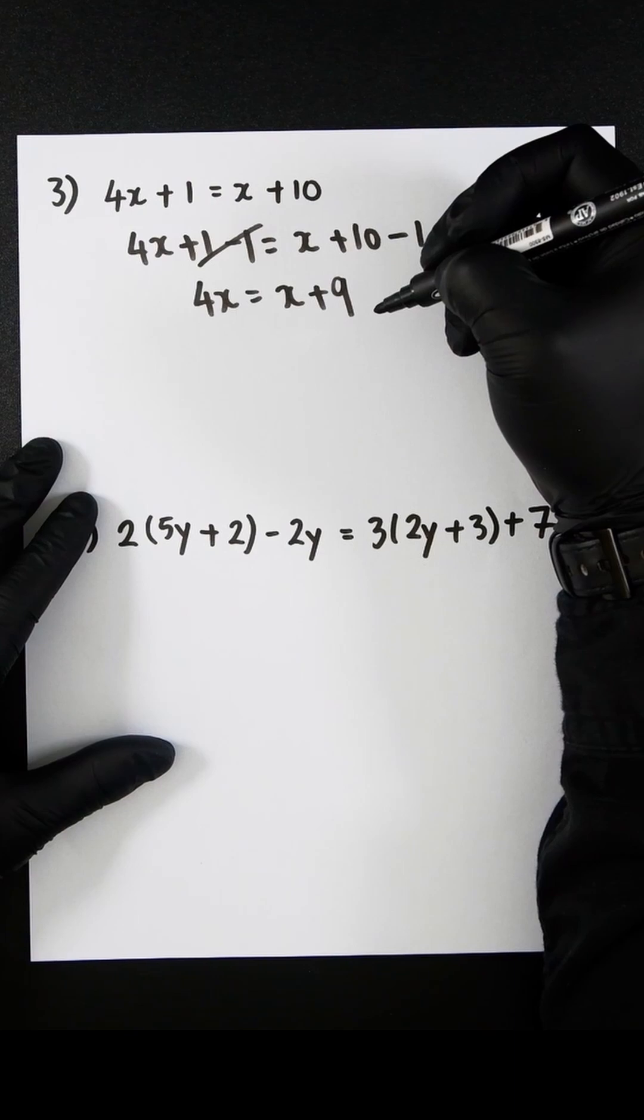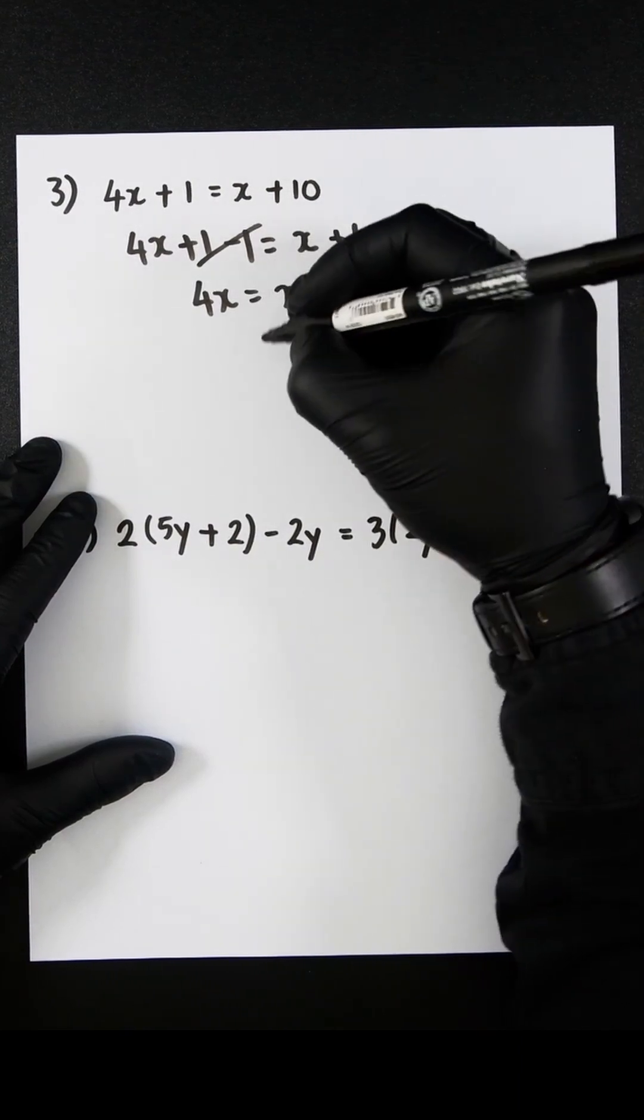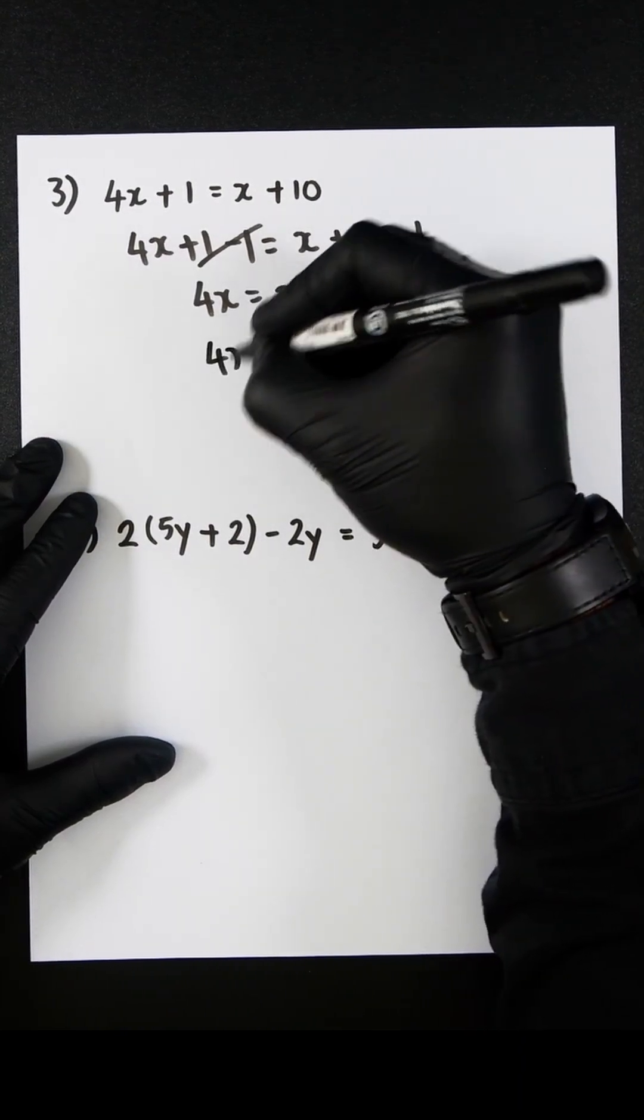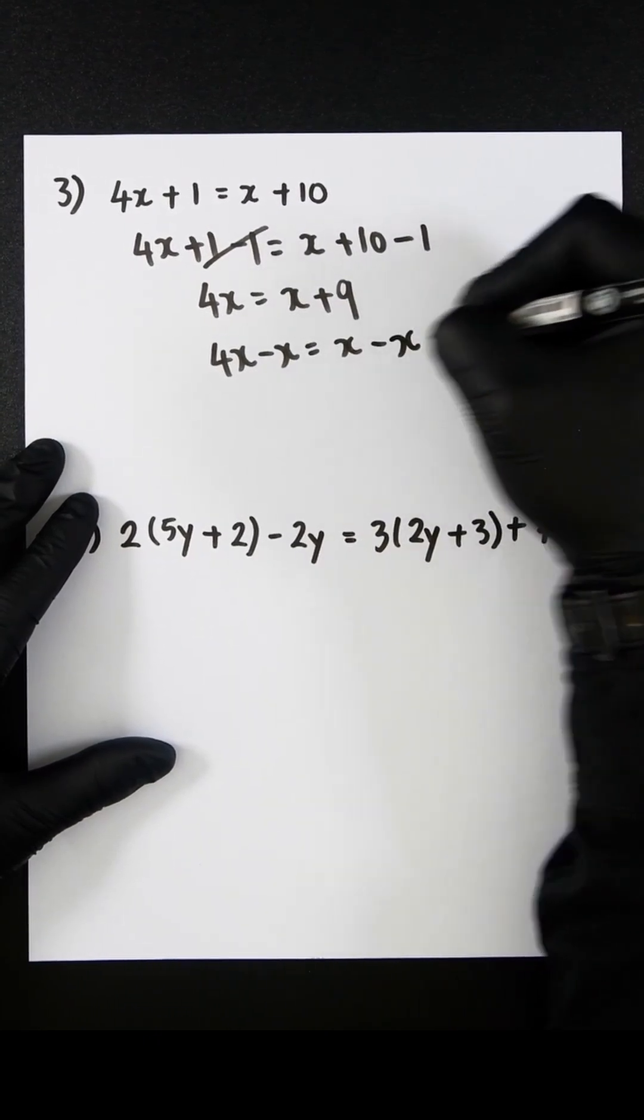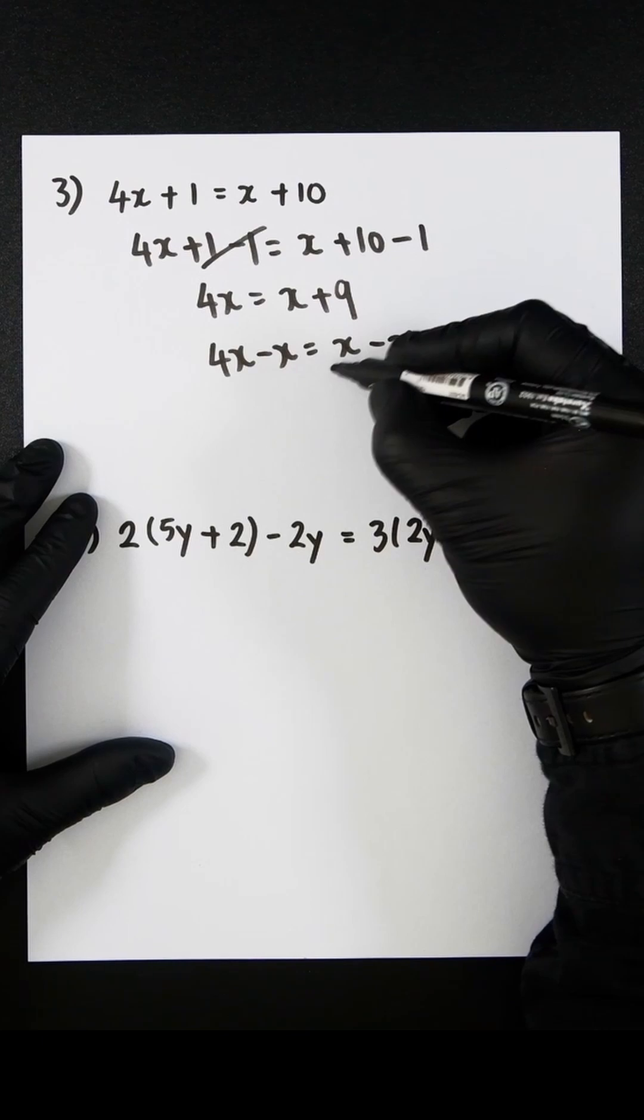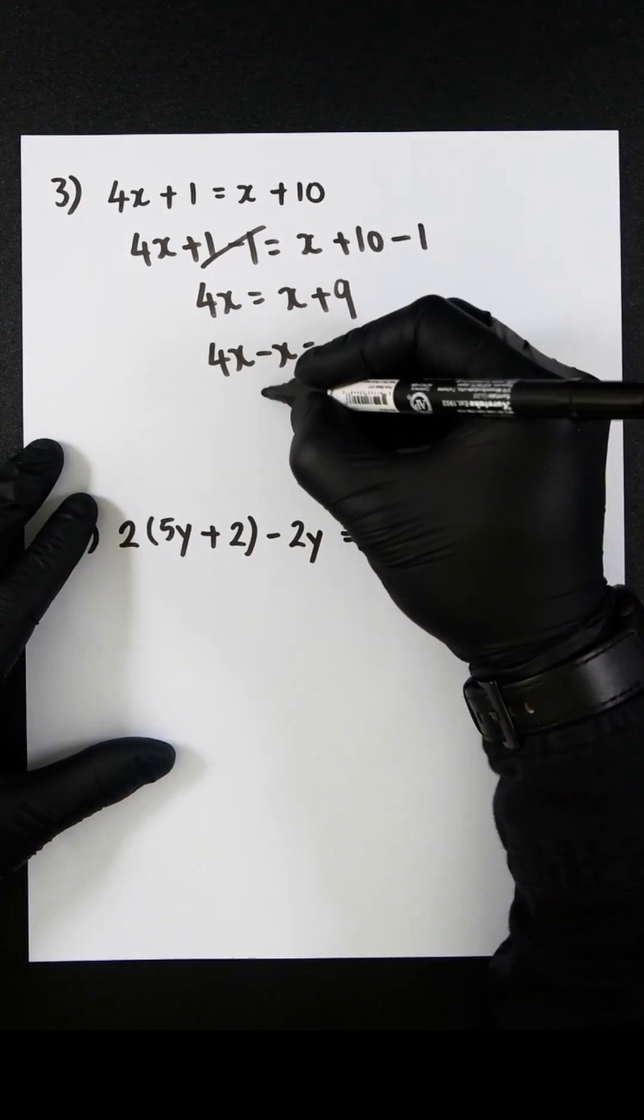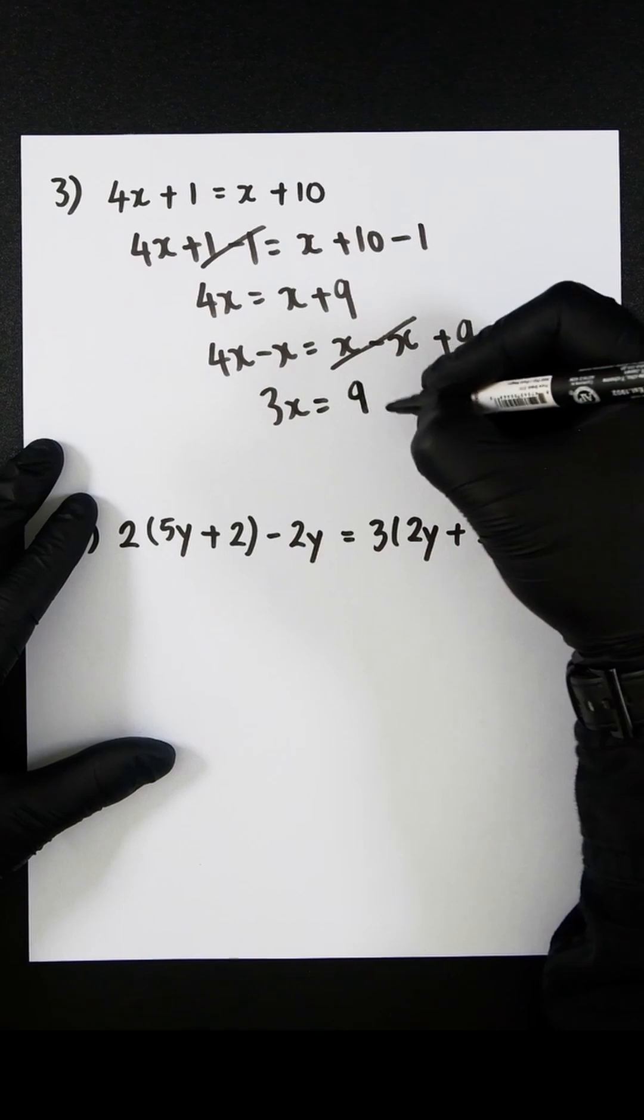Let's now subtract x from both sides. 4x minus x would be 4x minus x, which equals x minus x plus 9. This would cancel out and 4x minus x would be 3x, which equals 9.